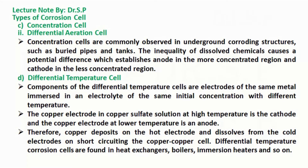The inequality of dissolved chemicals causes a potential difference which establishes the anode in the more concentrated region and the cathode in the less concentrated region.